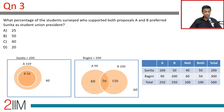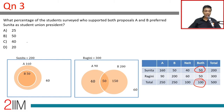Question 3: What percentage of students surveyed who supported both proposals A and B preferred Sunita as student union president? Out of 100 who liked both proposals, 50 preferred Sunita — that's 50%.